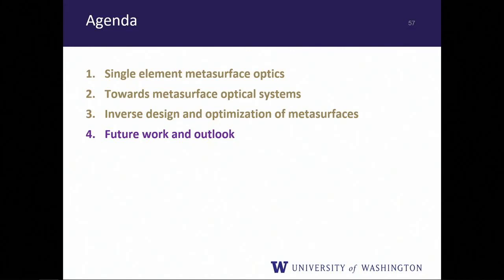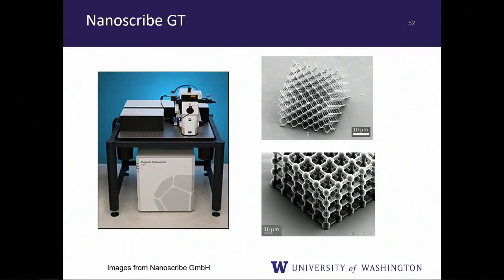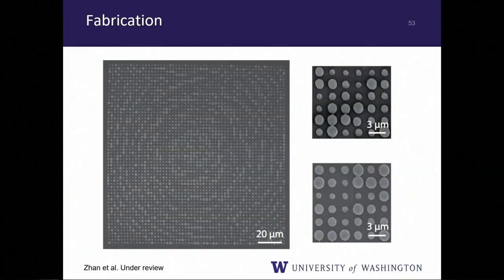In the 3D printed structure, the spheres are independent — sitting directly on a glass substrate without support structures. They are full spheres, though the cross-sectional SEM view can make them look like half-spheres. There is a slight flat base where the sphere meets the substrate. Occasionally samples fly off during rinsing, but since each print takes ~20 minutes, this is manageable.